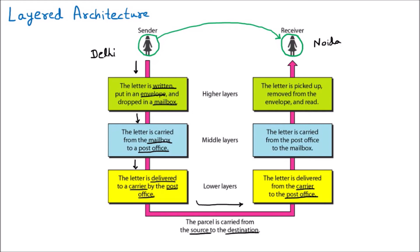On the other side, let's suppose my friend is in Noida. The letter is delivered from the carrier to the post office in Noida, then from the post office to the mailbox — say, in Sector 11. Afterward it is delivered to my friend's place, removed from the envelope, and read.